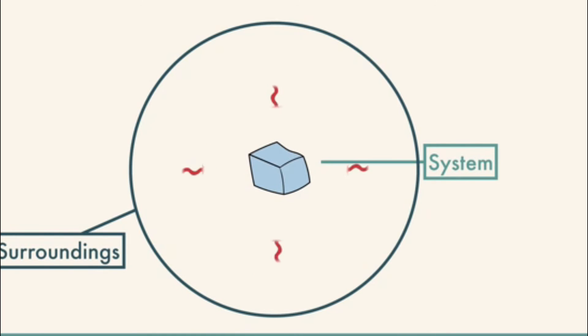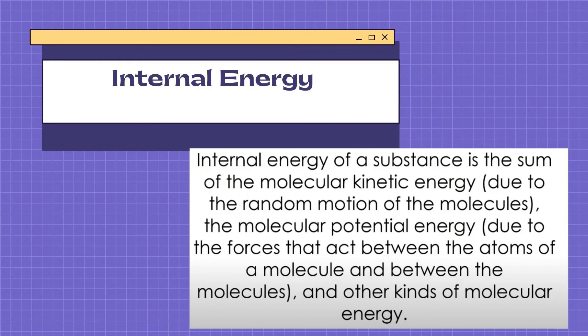The heat is leaving the surroundings and moving into the ice cube. The ice cube absorbs the heat from the surroundings, which causes it to melt. Internal energy of a substance is the sum of the molecular kinetic energy due to the random motion of the molecules, the molecular potential energy due to the forces that act between the atoms of a molecule and between the molecules, and other kinds of molecular energy.